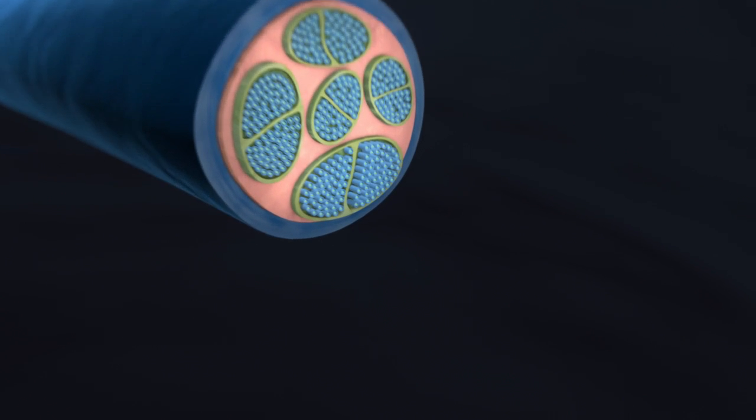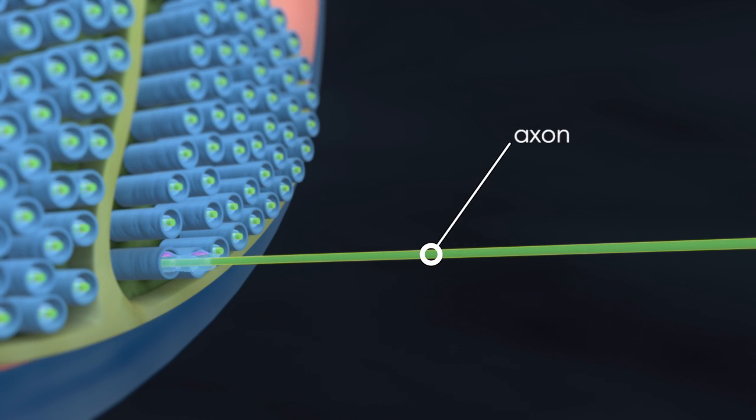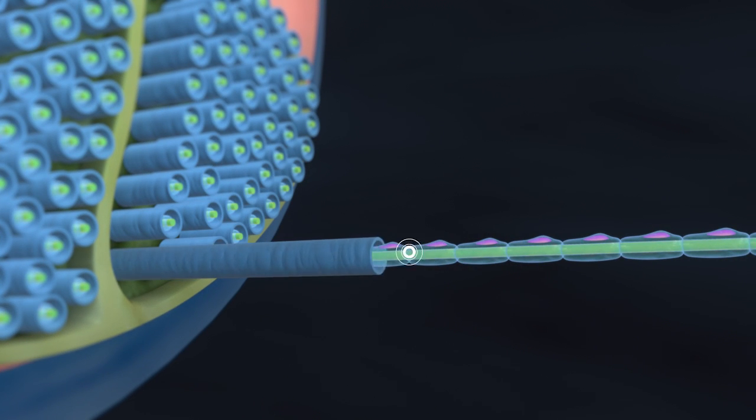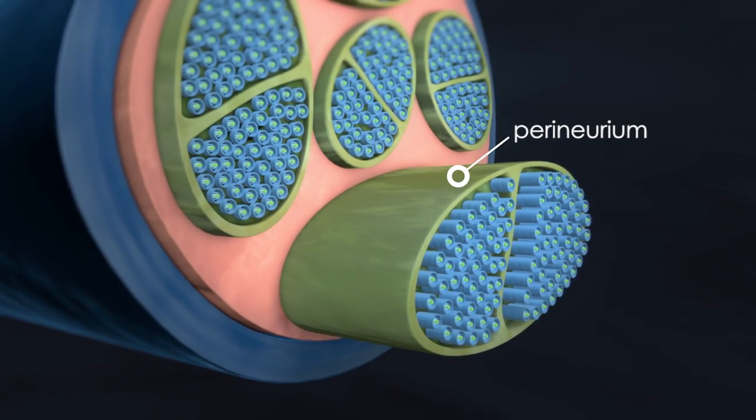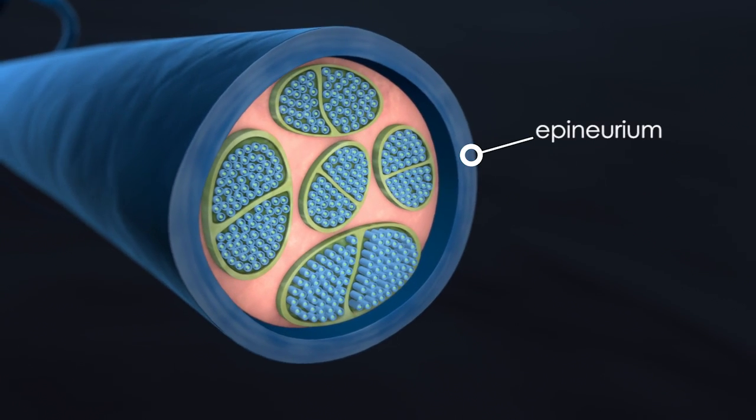As you can see, a nerve consists of thousands of axons encased in myelin sheaths within endonorial tubes. These tubes are bundled in the paranoreum and the complete nerve fiber is encased in the epinoreum.